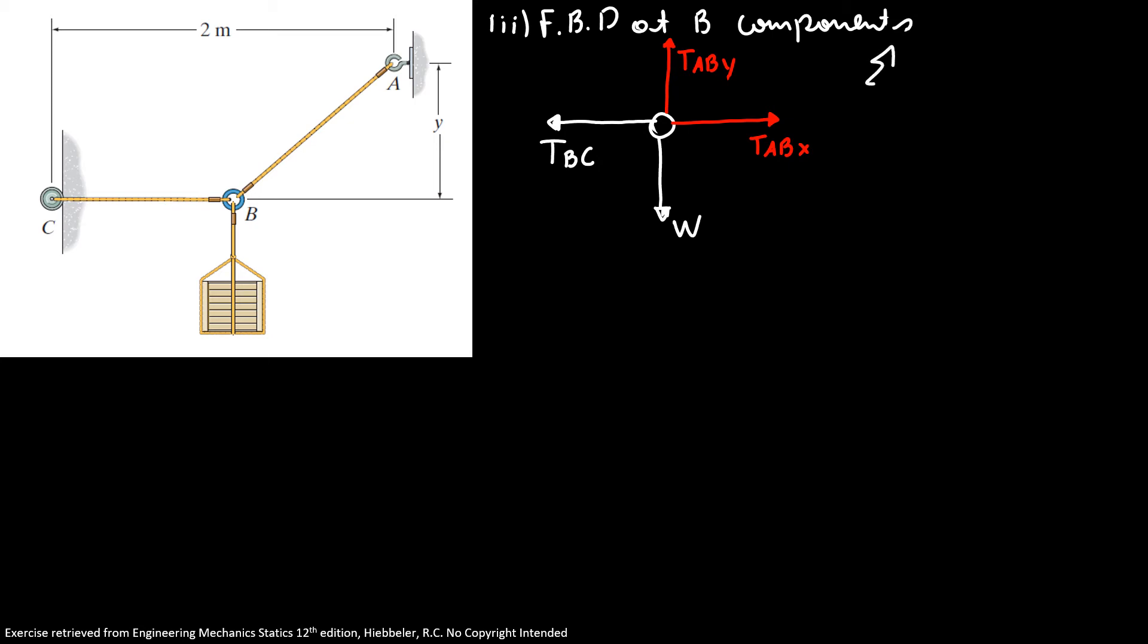The equations are the sum of the forces in Y direction has to be zero, and the forces in X direction has to be zero as well. I'm going to start with my sum of the forces in Y direction equals zero. The only forces I have: pointing up my tension AB in Y direction minus my weight because it's pointing down has to equal zero.